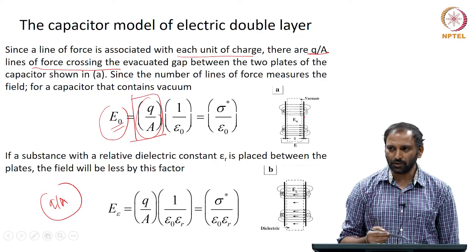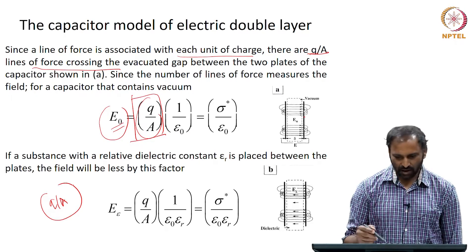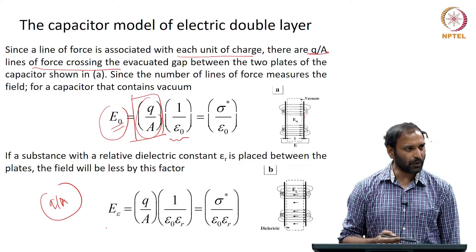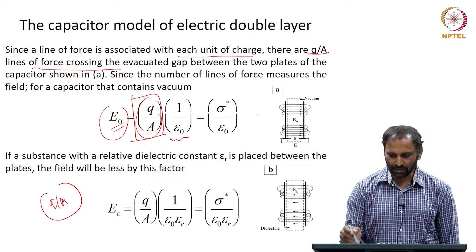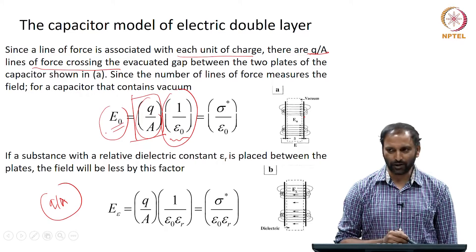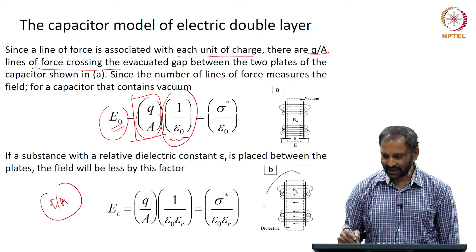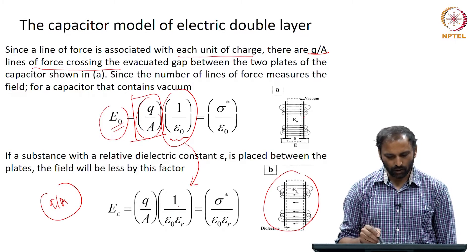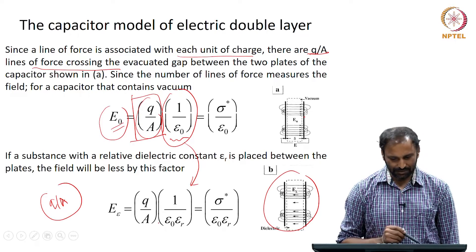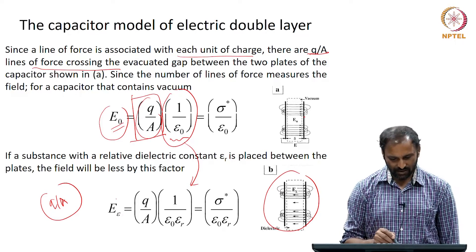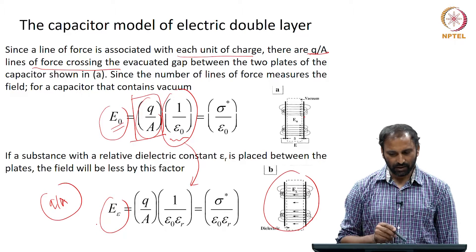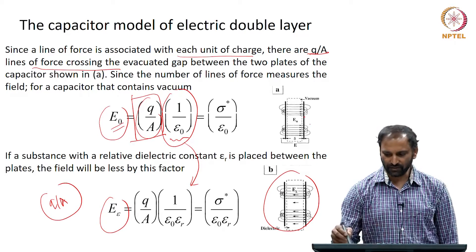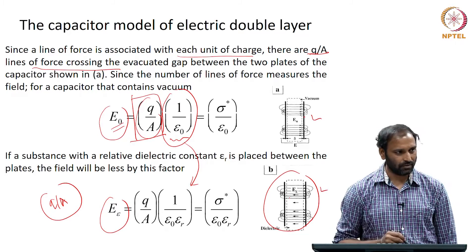The electric field generated is proportional to the number of lines of forces, and of course you have to take care of the effect of the medium between the two plates. In one case the medium is vacuum, therefore you have 1/ε₀. In the second case, when you have a dielectric medium present, you replace that with 1/(ε₀·εᵣ). So in essence, εᵣ and ε₀ tell you the electric field generated by the two arrangements shown here.